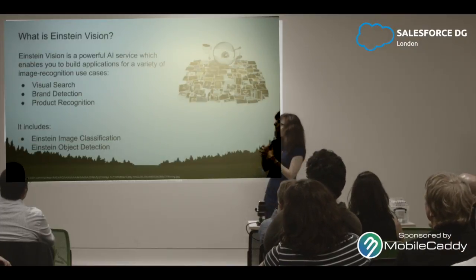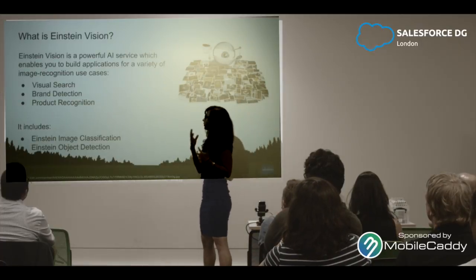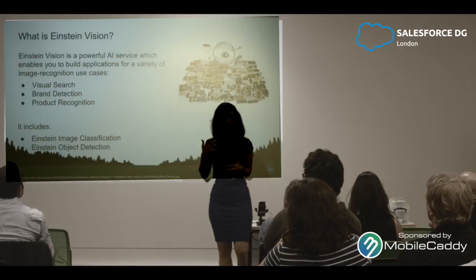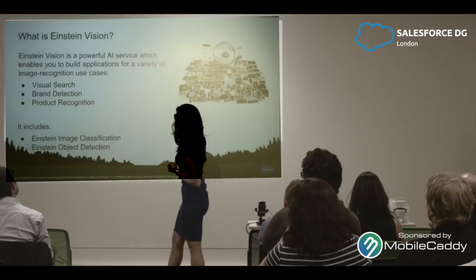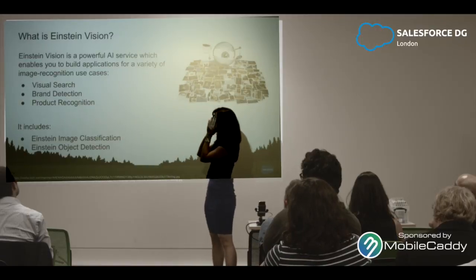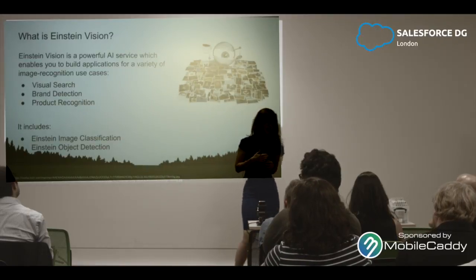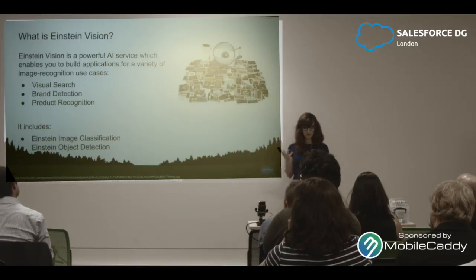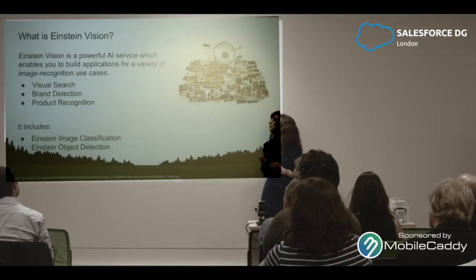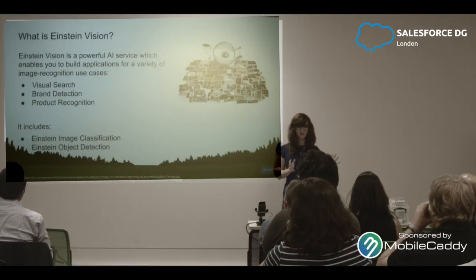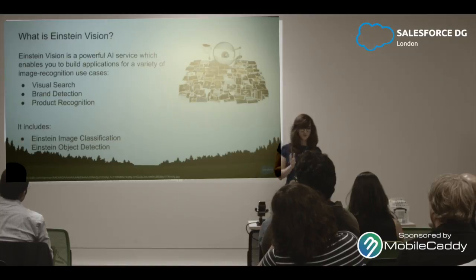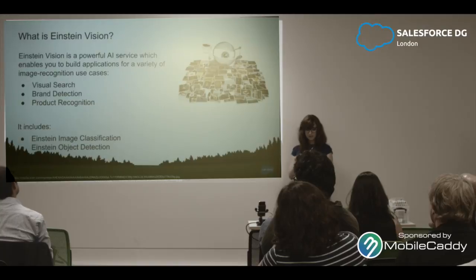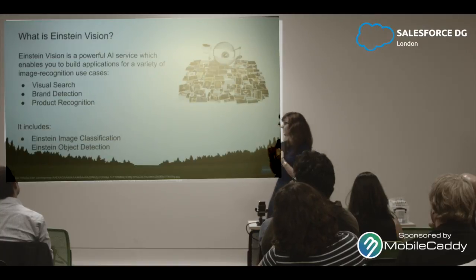So what is Einstein Vision? It's an AI tool. You can build powerful AI applications on Salesforce for a variety of image recognition cases, like visual search. You can do brand detection, product recognition, determine if something is hot dog or not hot dog, and classify animals. It includes Einstein Image Classification API and Einstein Object Detection.